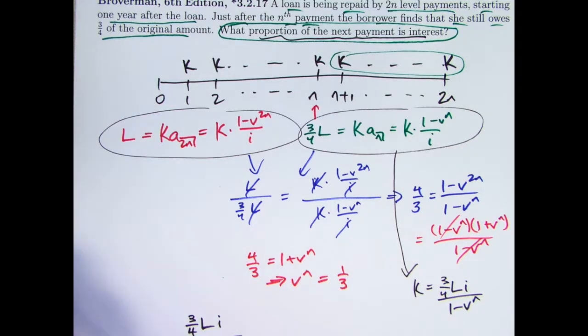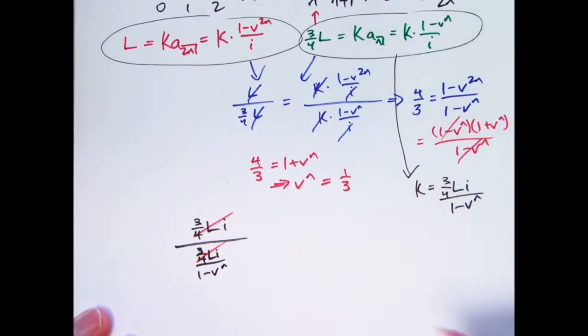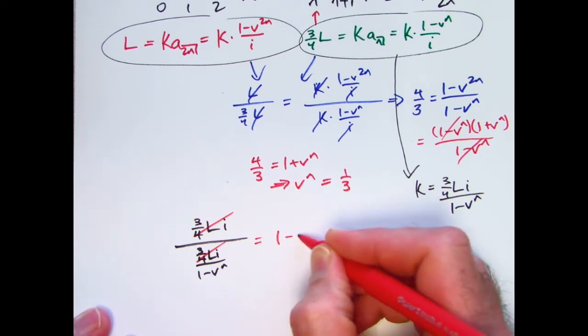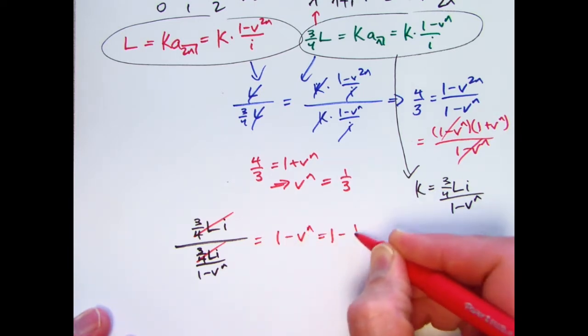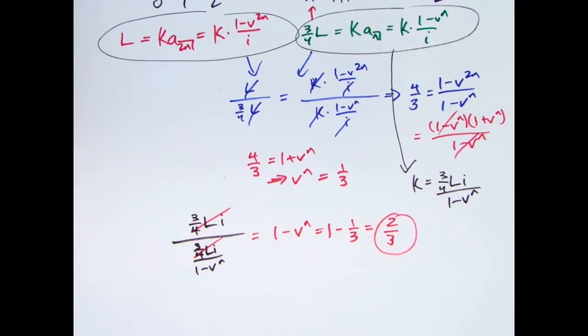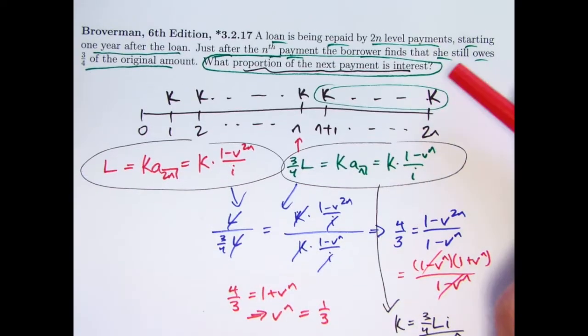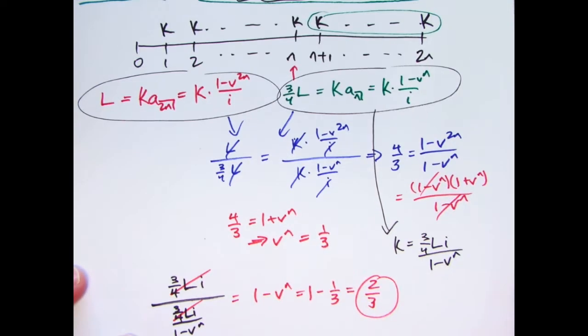And lo and behold, we get more cancellation. The three-fourths L times i's cancel. I'm left with 1 - V^N: 1 - one-third equals two-thirds. And that is the answer. Two-thirds of that payment at time N+1 goes toward interest.